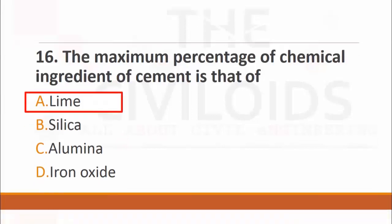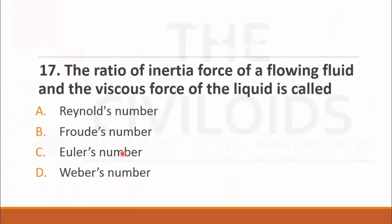MCQ number seventeen: The ratio of inertial forces of a fluid and the viscous force of the liquid is called. The choices are: A. Reynolds number, B. Froude's number, C. Euler's number, and D. Weber's number. It is the definition of Reynolds number that it is the ratio of inertial forces and viscous forces. The right choice is A. Reynolds number.